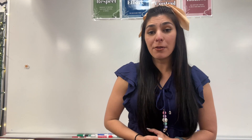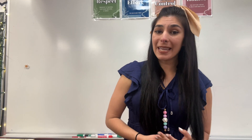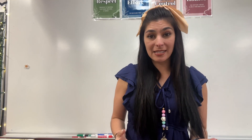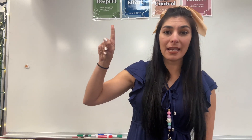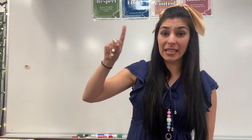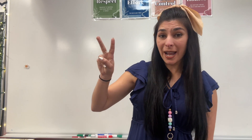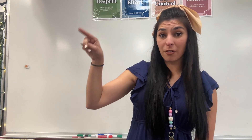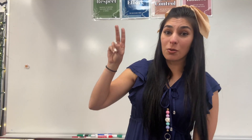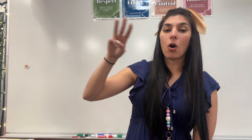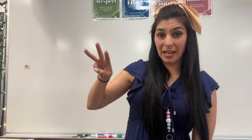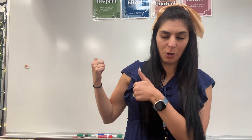Hey friends, welcome back. Today we're going over how to find the mean absolute deviation of a data set. There are three simple steps. Step one, we're going to find the mean of that data set. Step two, we're going to subtract each number from the data set from the mean. Don't worry, there are no negative numbers because we do it in absolute value. Step three, we're going to find the average or the mean of all of the new set of data.